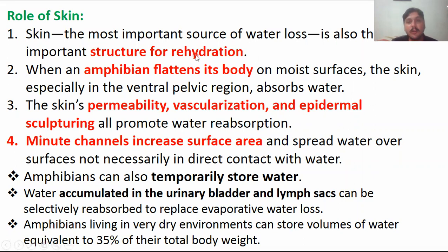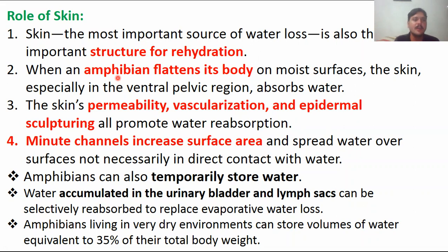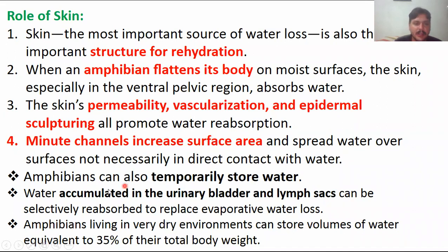Skin is an important source of water loss. The skin membrane is very thin and has high permeability to water. Blood vessels are present in the skin. In very dry environments, amphibians can store volumes of water equivalent to 35% of their total body weight in this way.